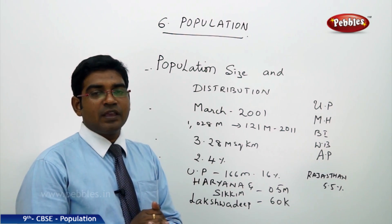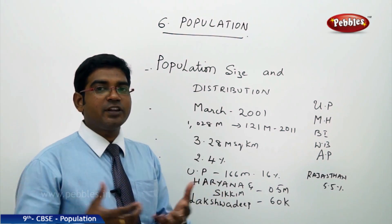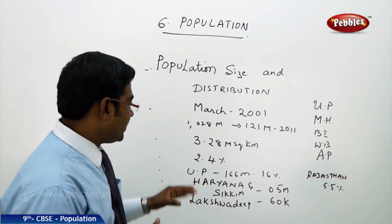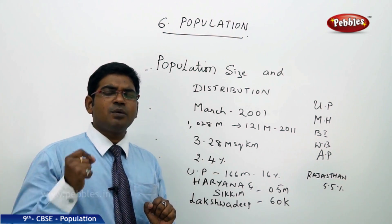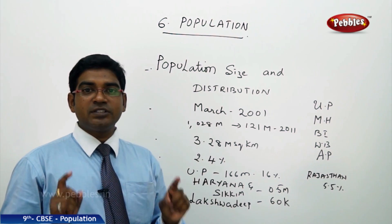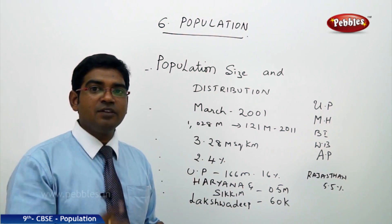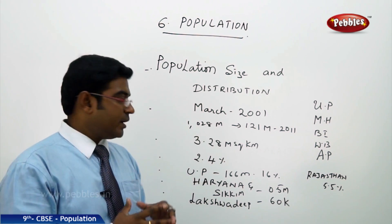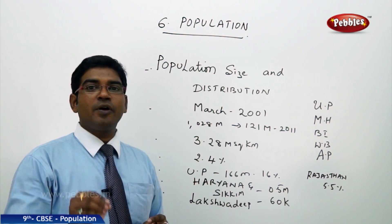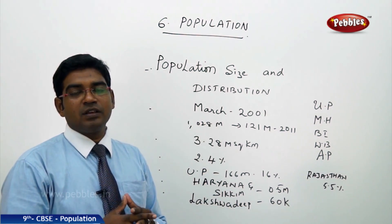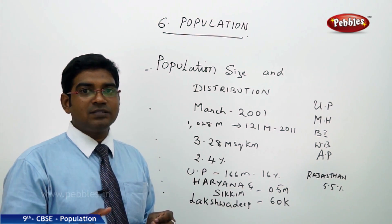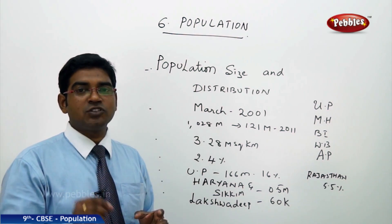A fundamental doubt arises: are these people equally distributed in all corners of the nation? No, absolutely not. We have a state called Uttar Pradesh where the maximum number of people live — UP has 166 million people, which accounts for 16% of the entire India's population living in just one state. On the other hand, Haryana and Sikkim together have only 0.5 million people.